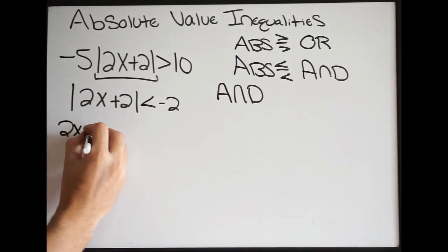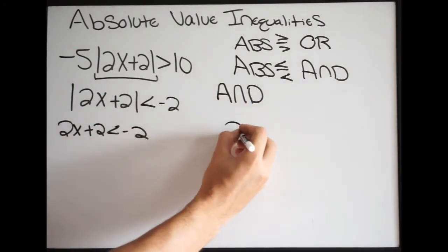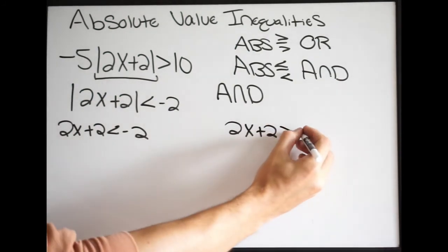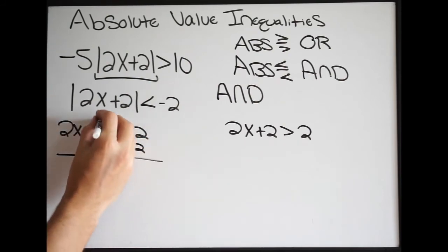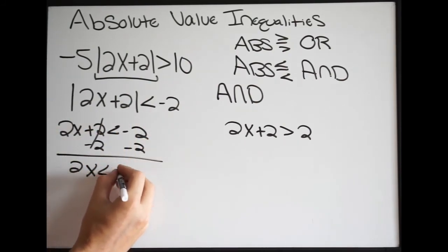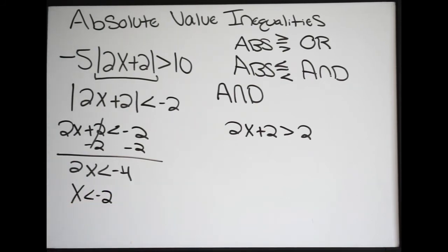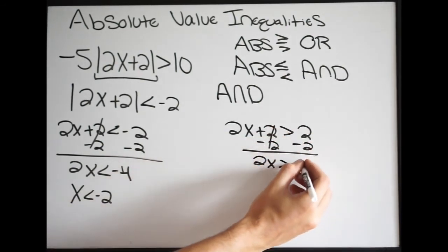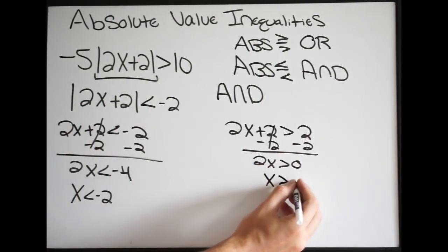We can write our two separate inequalities. We get 2x plus 2 less than negative 2. And then the second one: 2x plus 2 — flip the inequality and change the sign — greater than positive 2. Let's solve both. Minus 2 on both sides: we get 2x less than negative 4. Divide both sides by 2: x is less than negative 2. For the second: minus 2 on both sides — this cancels — we get 2x is greater than 0. Divide both sides by 2: x is greater than 0.